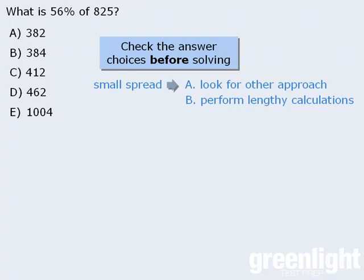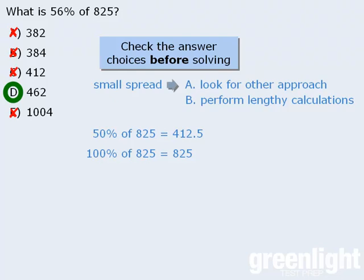Can you see a faster approach here? Notice that it's relatively easy to see that 50% of 825 is 412.5, and since we want to find 56% of 825, we know that the correct answer must be greater than 412.5, which means we can eliminate answer choices A, B, and C. Also, since 100% of 825 is 825, we know that the correct answer must be less than 825, which means we can eliminate answer choice E. So the correct answer must be D, and we didn't have to perform any lengthy calculations at all.